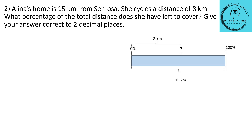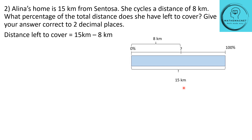Let's look at the bar model. Here this is the total distance that she has to travel from her home to Santosa, which is 15 kilometers. So 100% is 15 kilometers and she has already cycled a distance of 8 kilometers. What percentage of the total distance does she have left to cover? The distance left to cover will be 15 km − 8 km = 7 kilometers.